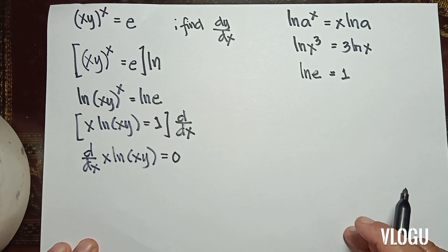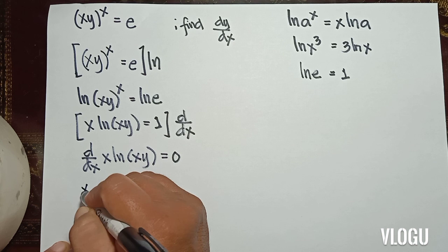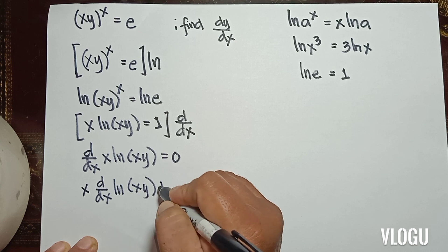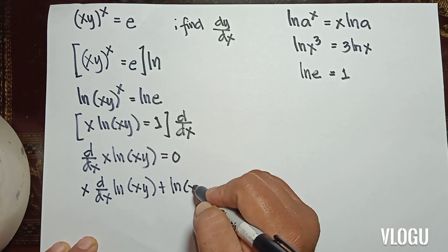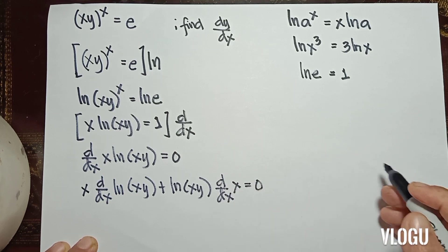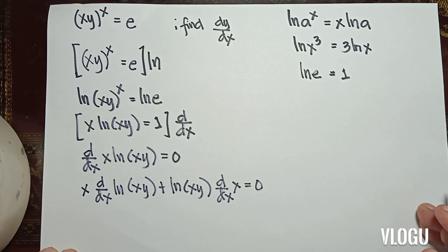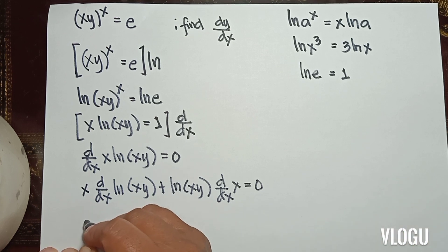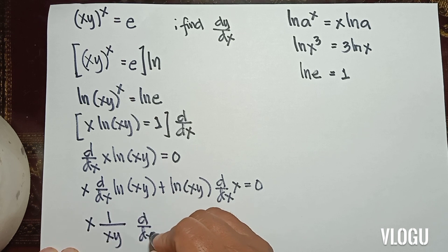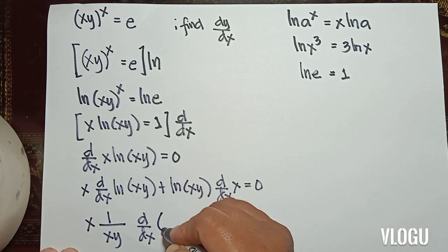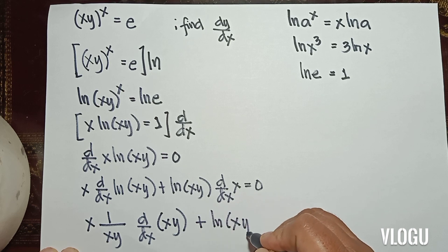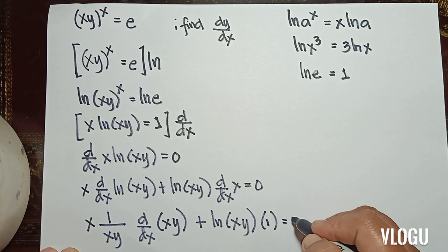Applying the product rule: x · d/dx of ln(xy) plus ln(xy) · d/dx of x equals 0. Therefore we have x · (1/xy) · d/dx of (x·y) plus ln(xy) · 1 equals 0.